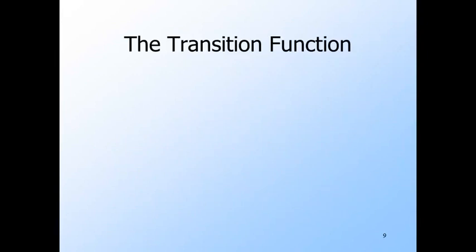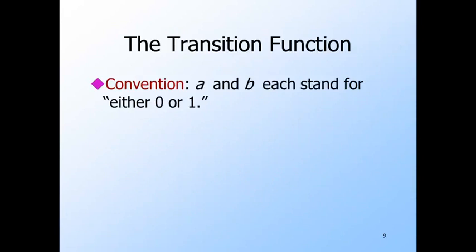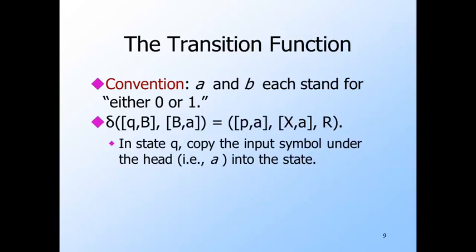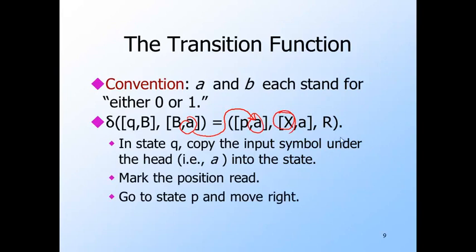We'll now describe the transition function of this Turing machine. A and B can each have the value 0 or 1, but in a rule all occurrences of one of these letters has the same value, so this represents a pair of rules, one for each value of A. It says that if the control state is Q, copy whatever symbol A is on the data track into the cache. The position under the head is marked X, the head moves right, and the control state becomes P.